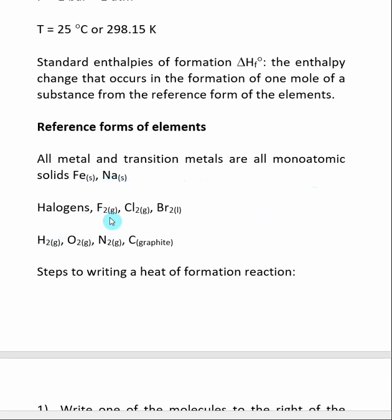Halogens: F2 is found in a gaseous state, Cl2 is gaseous, Br2 is a liquid. H2 is in a gaseous state. O2 is in a gaseous state. N2 is in a gaseous state. And carbon is found as graphite.